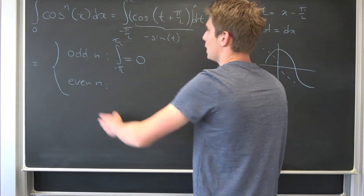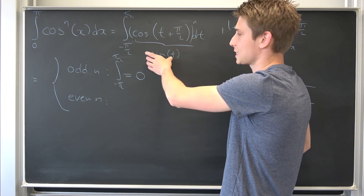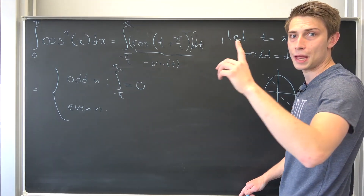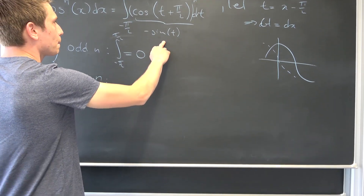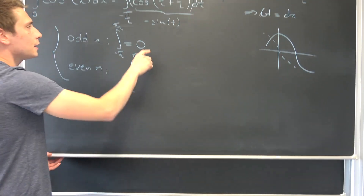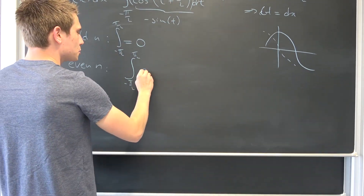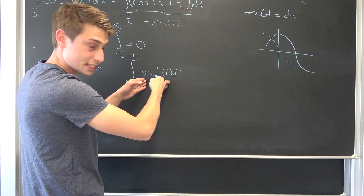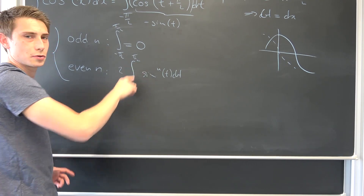What happens if our n is even? Plugging negative t in gives us negative sine of t to the nth power, but negative 1 to any even power is positive. So overall we are going to get the integral from negative pi over 2 to pi over 2 of the sine to the nth power of t, dt. Since we have an even integrand over a symmetric integral, we are left with 2 times this integral from 0 to pi over 2.